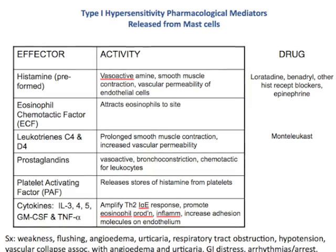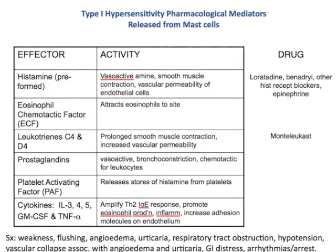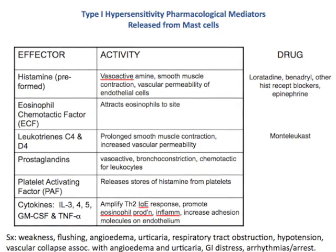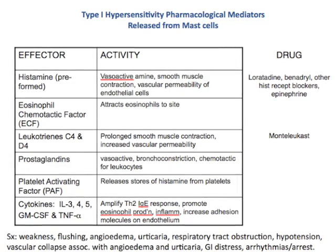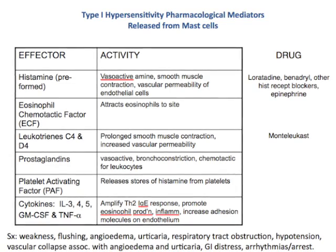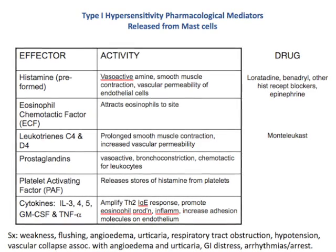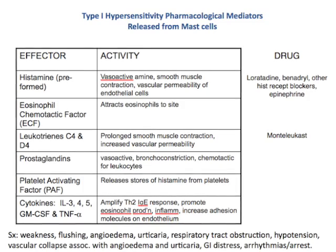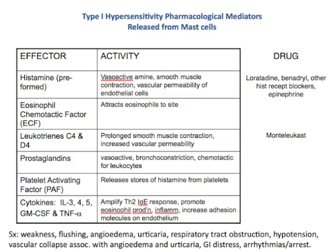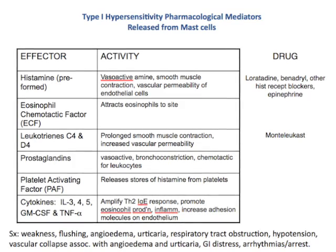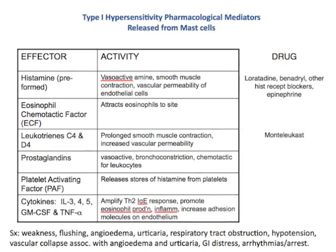This is a table from our MBLD lectures. On the left you can see some of the effectors in type 1 hypersensitivity and their activity on their targets. These include histamine, eicosanoids, and cytokines, and so on. On the right, you can see some of the drugs used to counter them. This is just a reference slide. On the bottom, you see the symptoms involved in type 1 hypersensitivity, and we saw a lot of these in our patient.